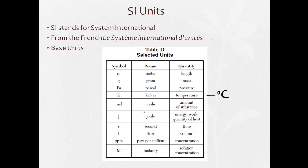Later in the year, you'll learn what some of these others mean, like moles and joules, parts per million and molarity. For right now, the important ones that we're going to use are the meter, the gram, Kelvin and degrees Celsius.